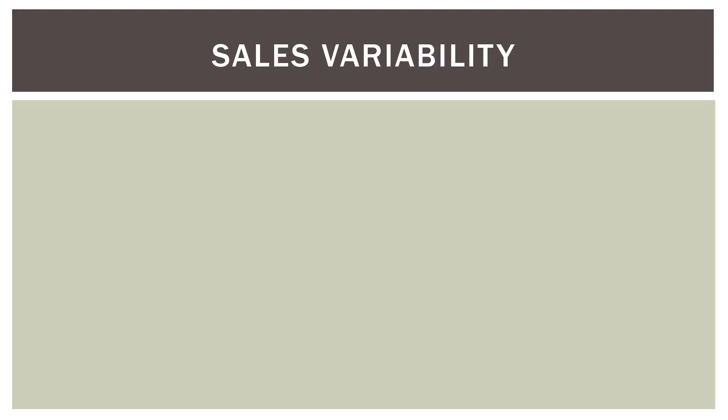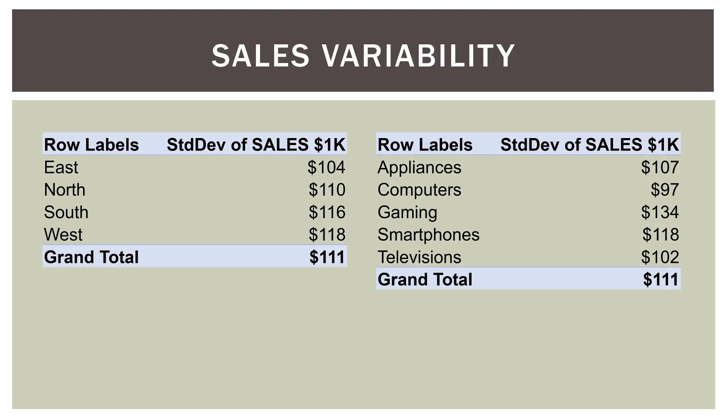What about variability? With a click of the mouse, we can see how sales vary. This shows the standard deviation of sales by region on the left and by segment on the right. In the east region, the standard deviation was $104,000. The west region was much more variable at $118,000. Overall, the standard deviation for each observation was $111,000. For segments, computers had quite low variability while gaming had the highest variability in its sales.